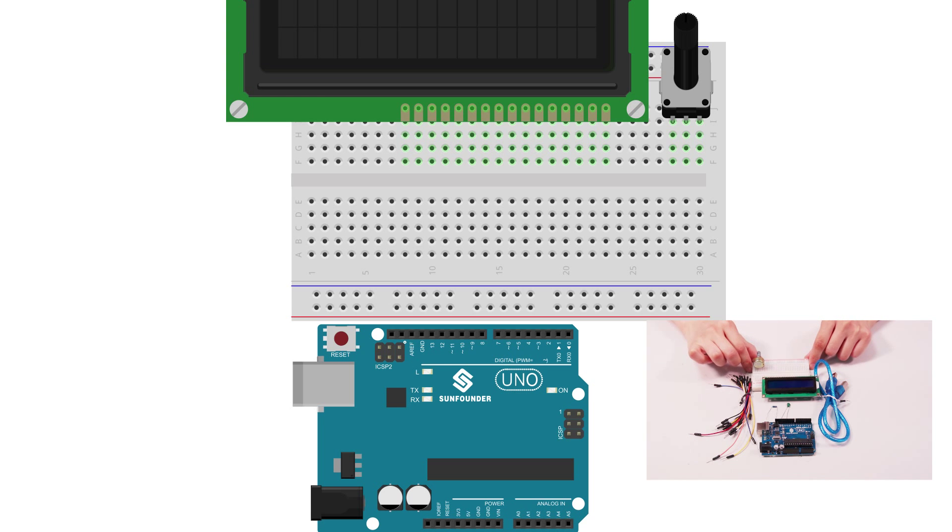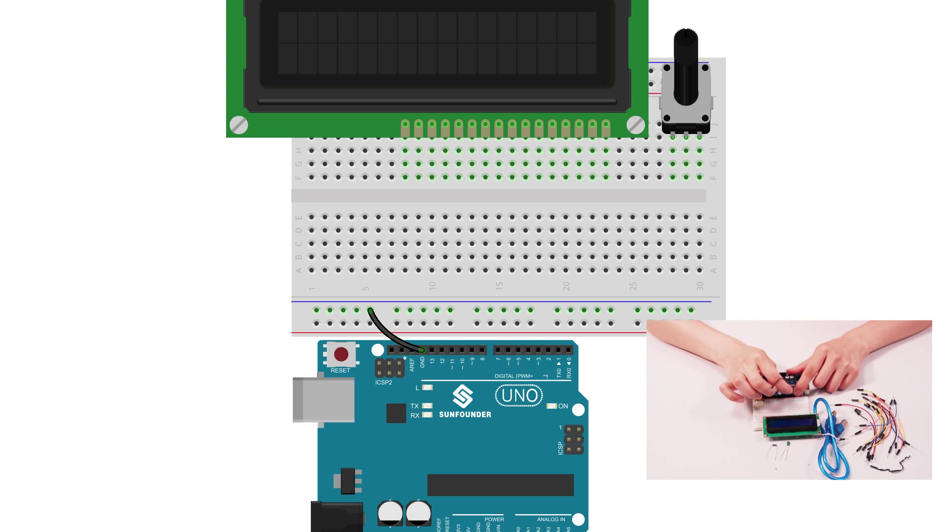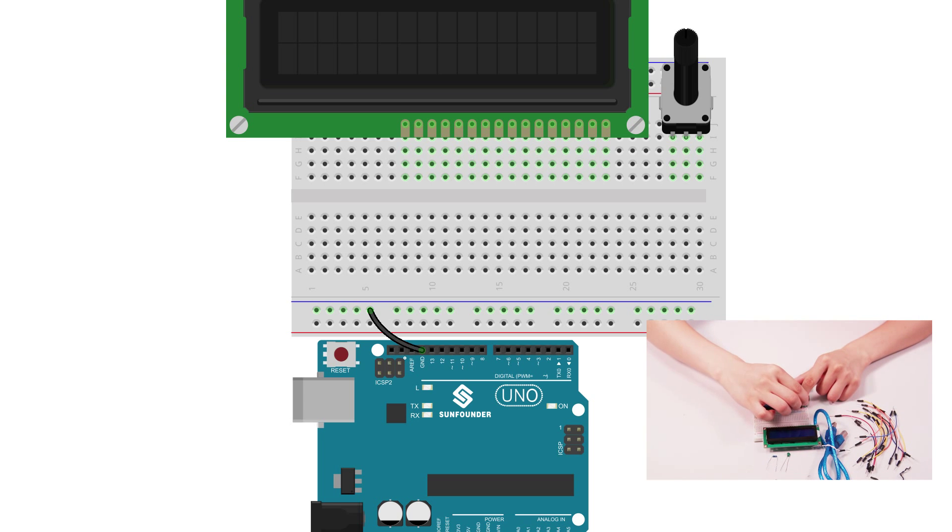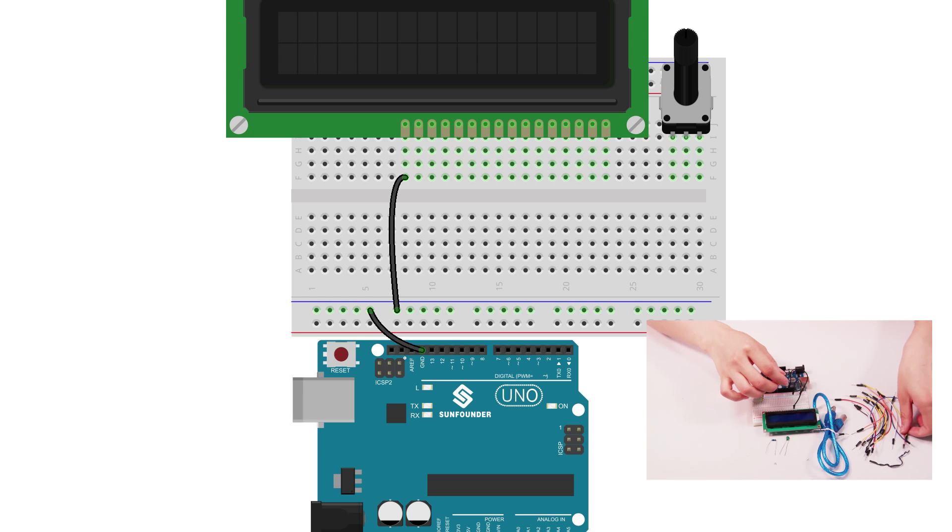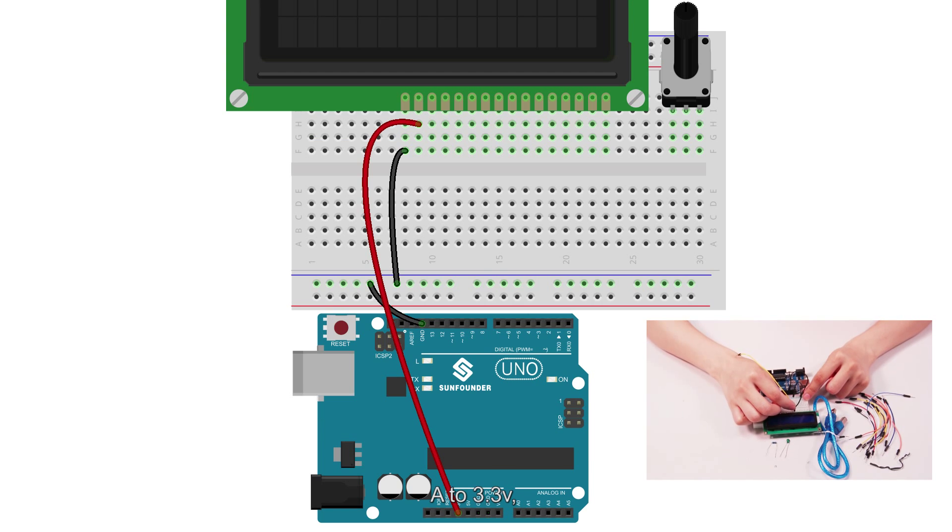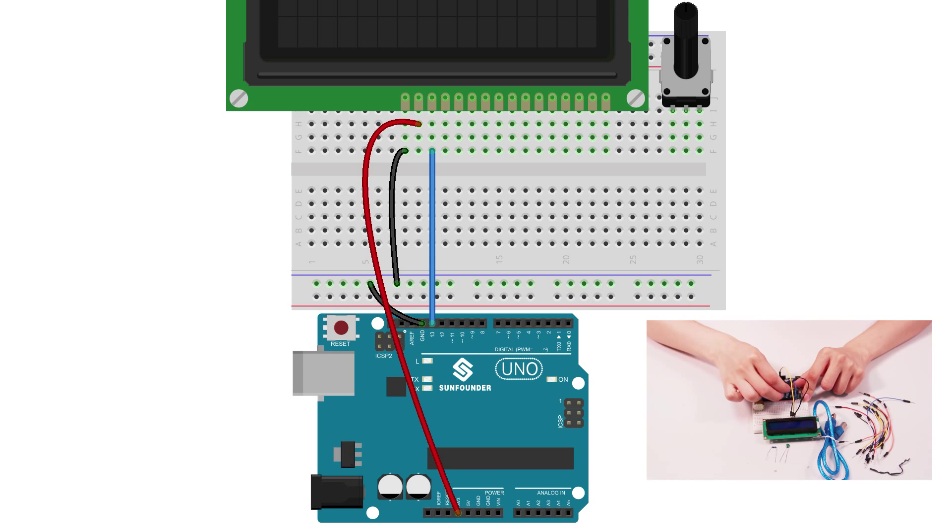Hook up LCD1602 and the potentiometer to the breadboard. And then GND of the SunFounder Uniboard to the breadboard. Hook up pin K of LCD1602 to GND. A to 3.3V. D7 to pin 13. D6 to pin 12. D5 to pin 11. D4 to pin 10.